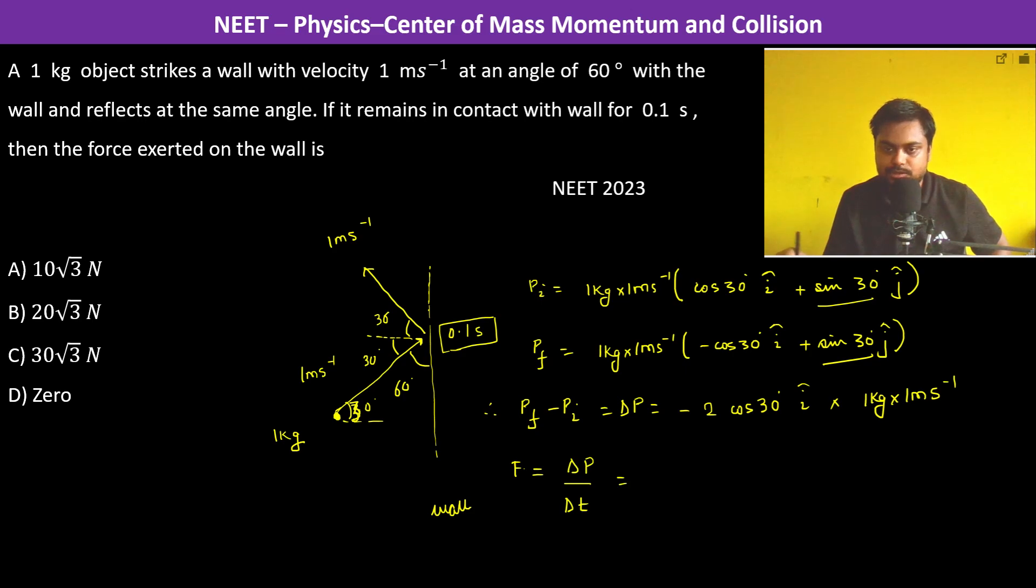minus 2 cos 30°, which is √3/2, into 1 kg meter per second divided by 0.1 seconds. 0.1 seconds cancels out, so this is 10√3 newtons. So therefore A is going to be the answer.